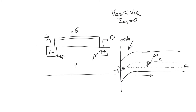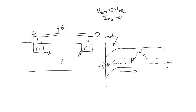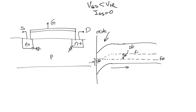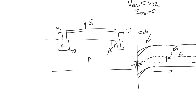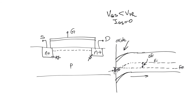This is not true. Below the threshold voltage there is still a channel, because there is still bending — just less of it. The Fermi level is still above the intrinsic Fermi level, indicating that there is a channel between drain and source. That channel is not as rich in electrons as the channel above V_threshold, but it is still a channel — a diffuse or weak channel that exists below V_threshold.